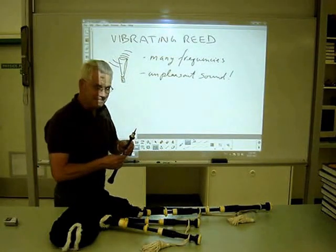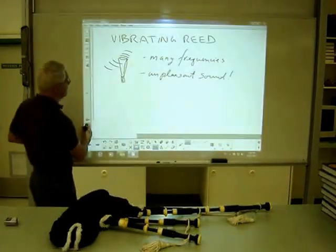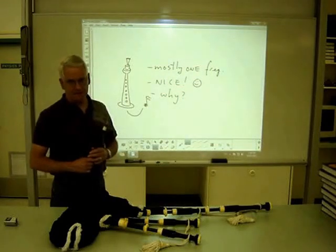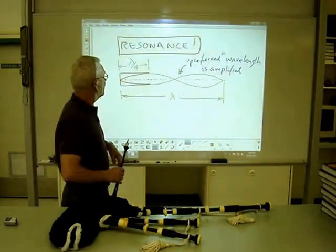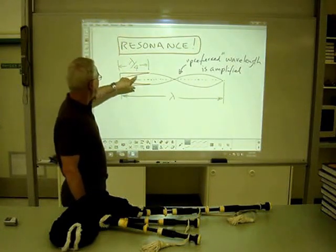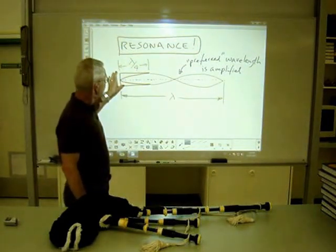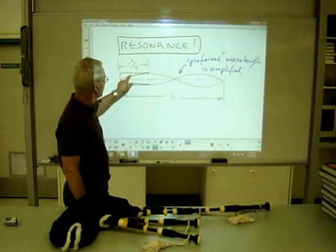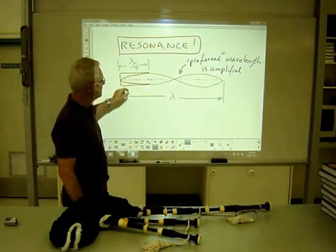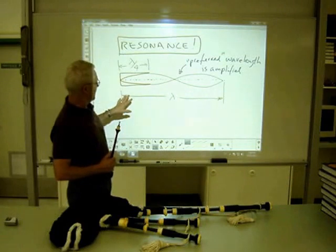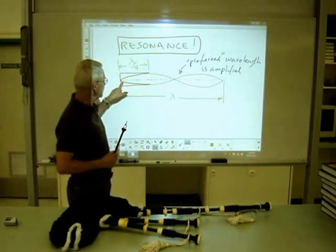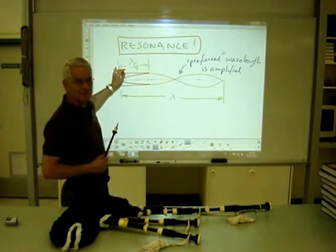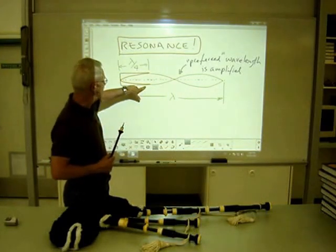So what is the difference? Mostly one frequency is being played, depending on how many holes I've covered up, and that's a really nice sound. The reason for this nice sound is the physical phenomenon of resonance. Here I've shown a schematic of a closed-end pipe, which is what this acts as, and we have a standing wave pattern set up — a quarter wavelength resonance. What happens is the length of the pipe actually determines — it influences how the reed itself is vibrating — and it will vibrate at that specific resonant frequency.